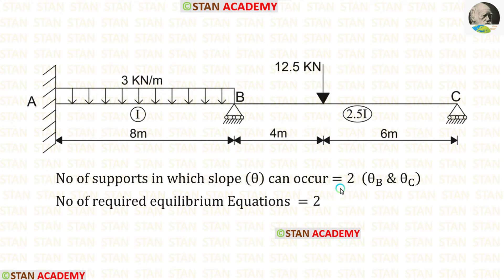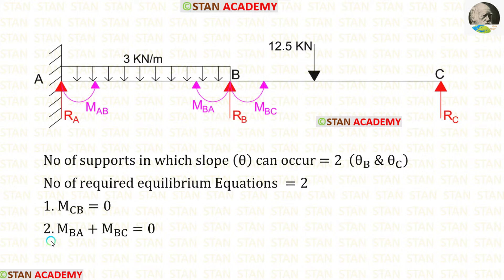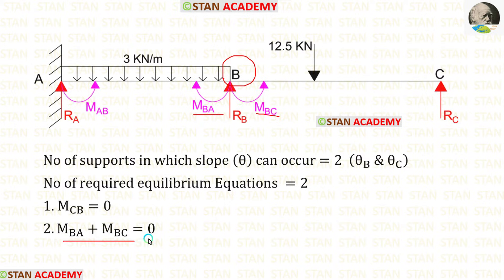To find these 2 unknowns, we need 2 equilibrium equations. The first equilibrium equation can be made at point C, where MCB is 0. The second equation can be made at joint B, where MBA and MBC are present, and when we add these 2 moments, the result will be 0.